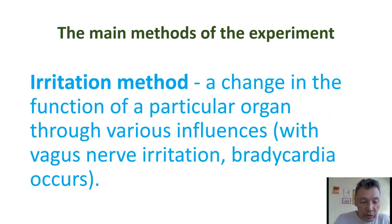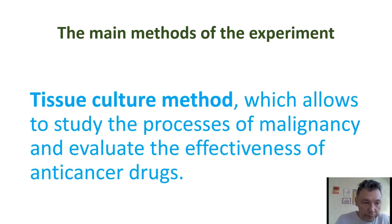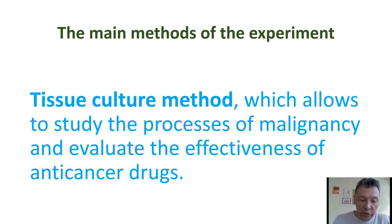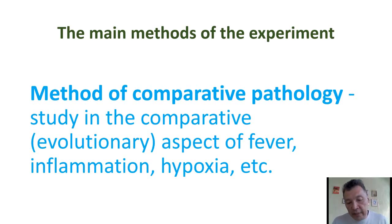Additional methods include changing the function of particular organs through various influences, the method of isolation or perfusing organs, and the method of tissue culture — which allows study of the processes of malignancy and evaluation of the effectiveness of anti-cancer drugs. The method of comparative pathology studies comparative aspects of fever, inflammation, hypoxia, and others.